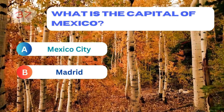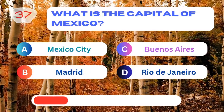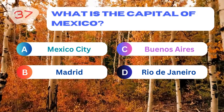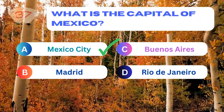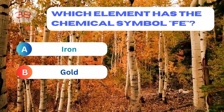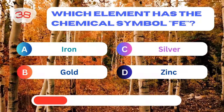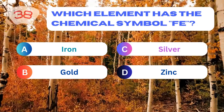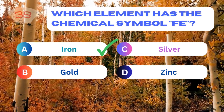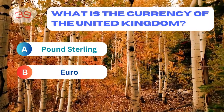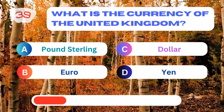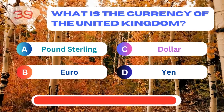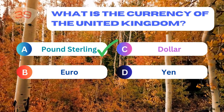What is the capital of Mexico? Mexico City. Which element has the chemical symbol Fe? Iron. What is the currency of the United Kingdom? Pound Sterling.